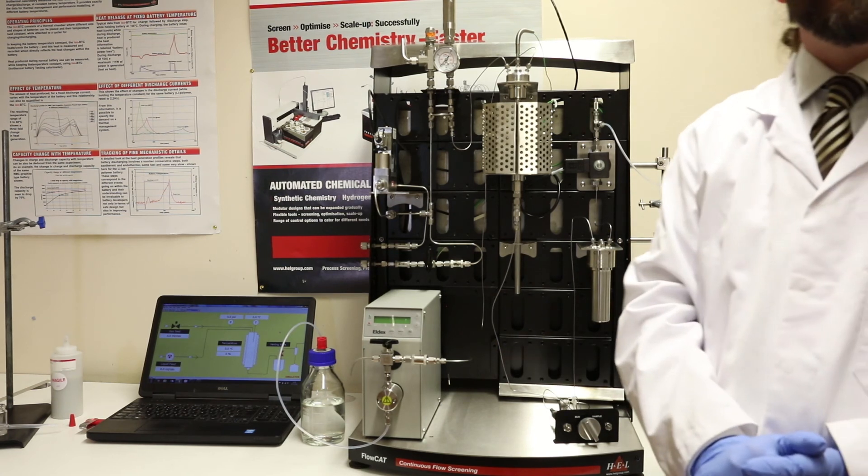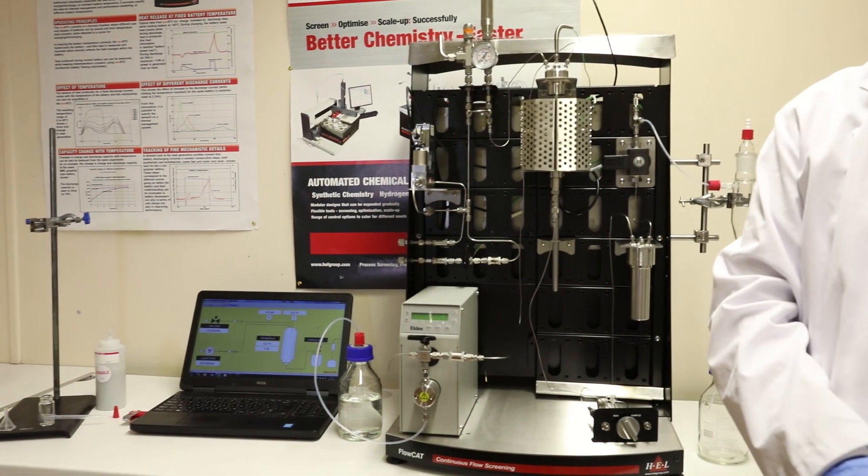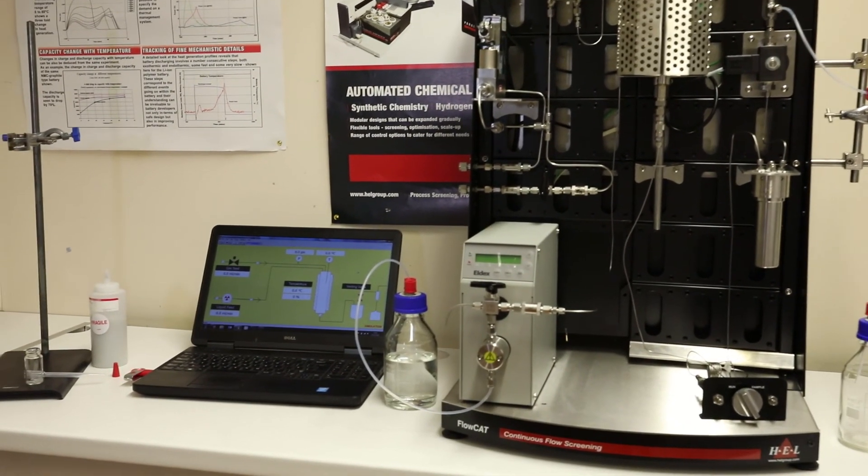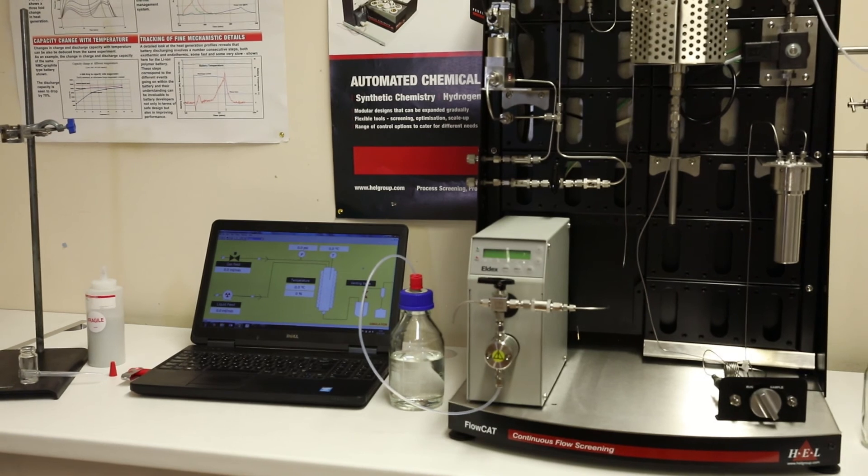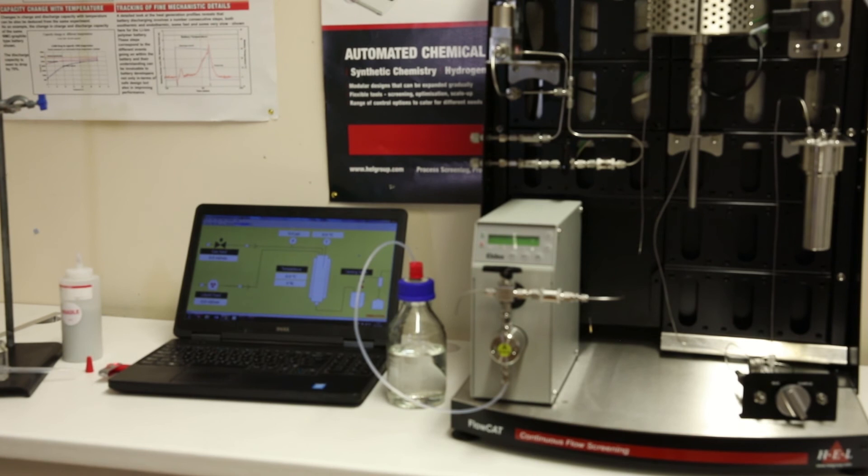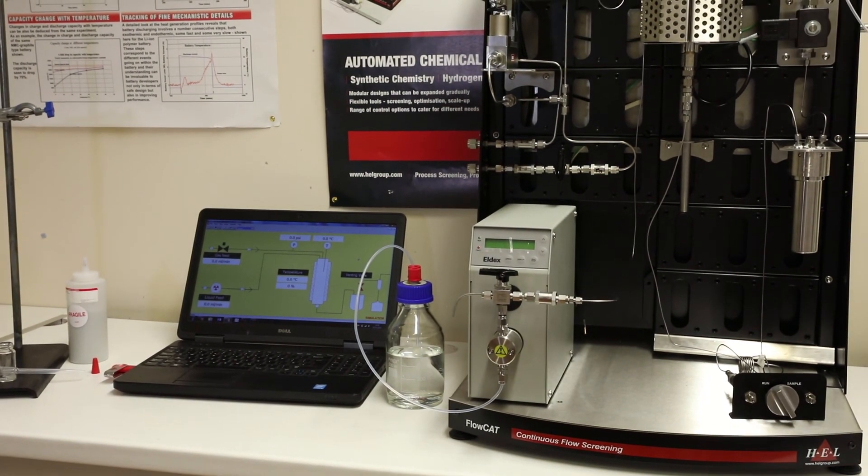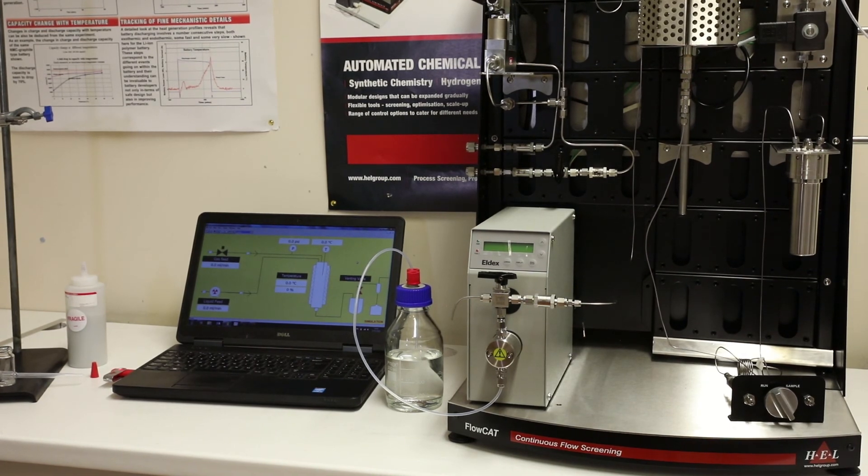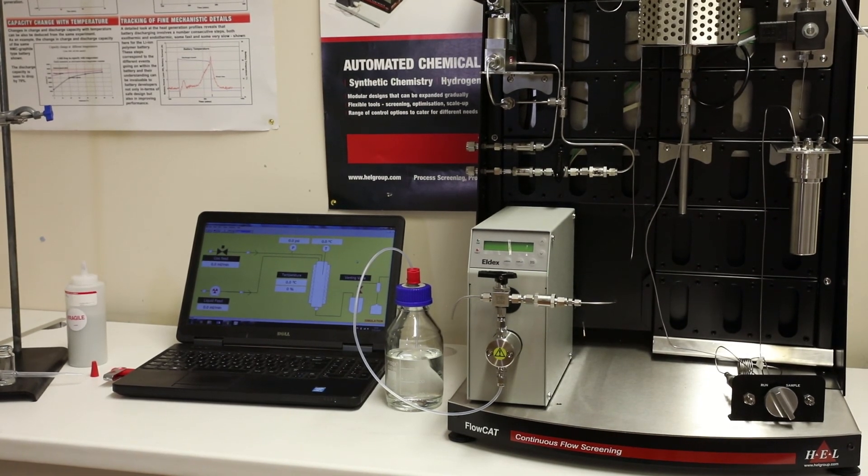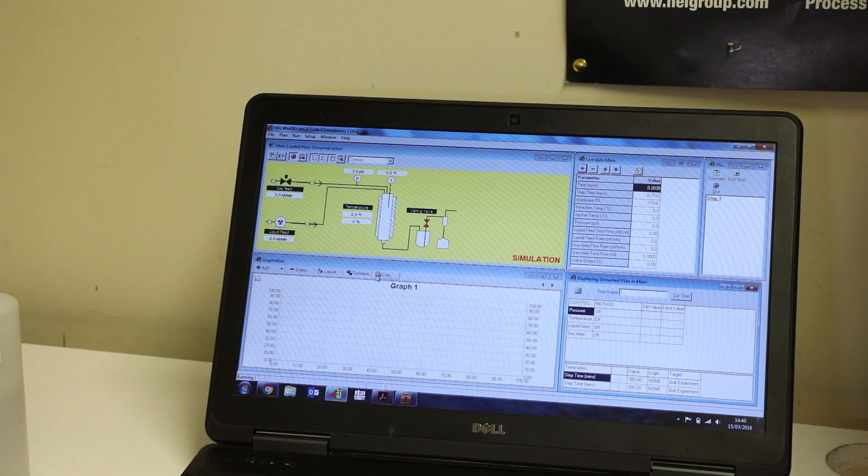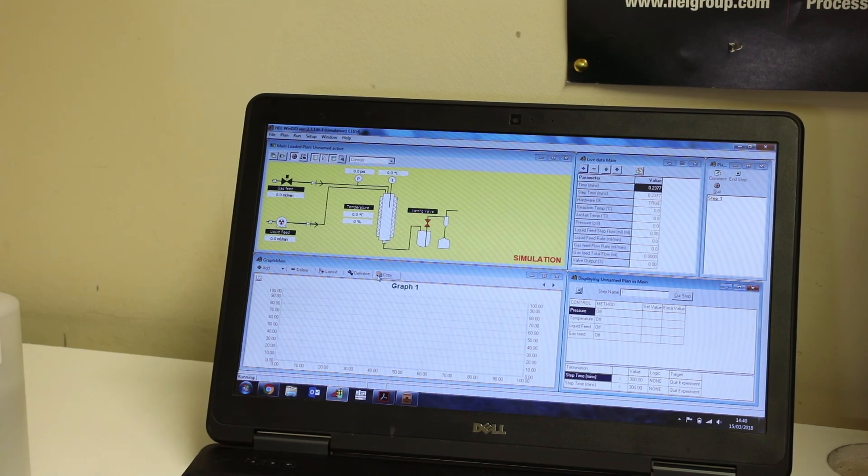Sitting above all of this is our WinISO control software. The WinISO software incorporates modules which can trigger safety shutdowns based upon any variable on the system. So you can set a shutdown temperature, a shutdown pressure, a shutdown flow rate, even a shutdown difference between the jacket and the reactor bed temperature. So if you see the reactor bed suddenly go up in temperature when you're not heating, you know there's an exotherm and you want to kill the flows. The system is fully controlled by our WinISO software which allows you to write recipes and methods which the computer will run automatically and the system can be operated fully unattended.